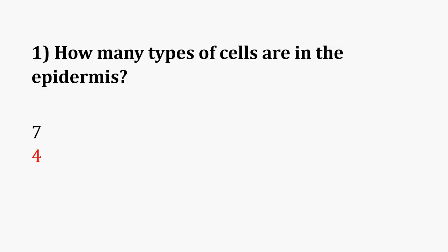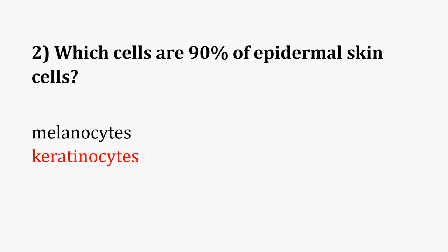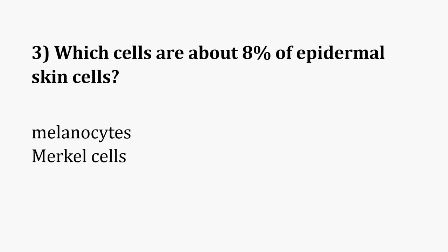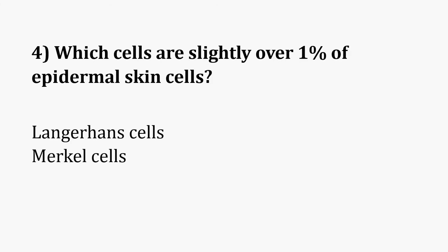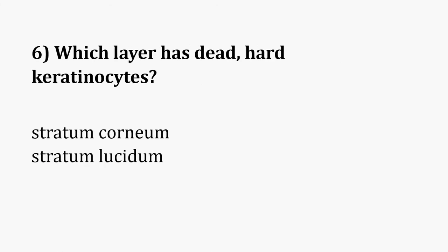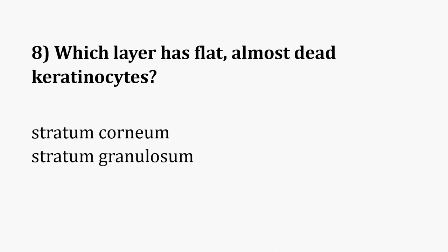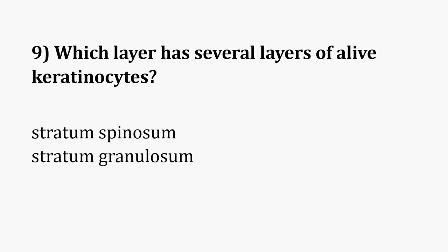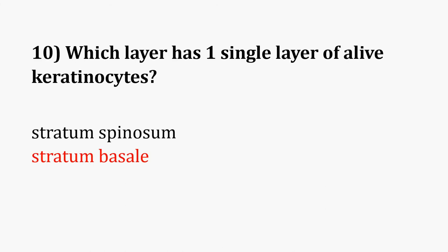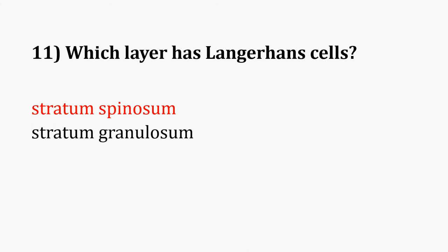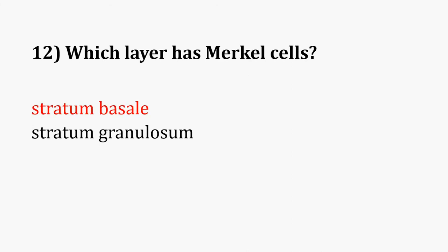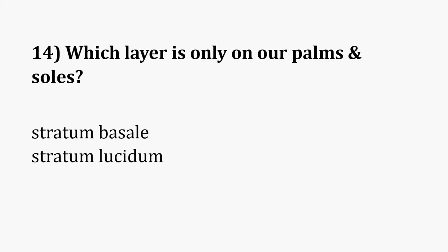Review: There are four types of cells in the epidermis. Keratinocytes are 90%, melanocytes are about 8%, Langerhans cells are slightly over 1%, and Merkel cells are slightly less than 1%. The stratum corneum has dead, hard keratinocytes. The stratum lucidum has clear, dead keratinocytes. The stratum granulosum has flat, almost dead keratinocytes. The stratum spinosum has several layers of alive keratinocytes, and the stratum basal has one single layer of alive keratinocytes. Langerhans cells are in the stratum spinosum; Merkel cells and melanocytes are in the stratum basal. The stratum lucidum is only on our palms and soles.